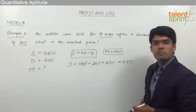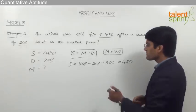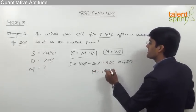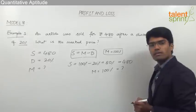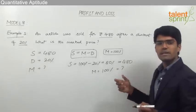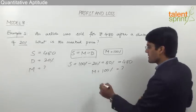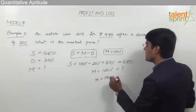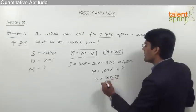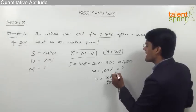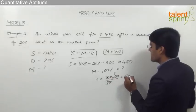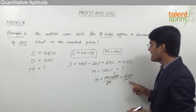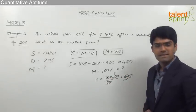We are supposed to find the marked price, which is equivalent to 100%. By cross multiplication, marked price equals 100 × 480 ÷ 80. Since 80 divides into 480 six times, we get 100 × 6 = 600 rupees. So the marked price of the article is 600 rupees.